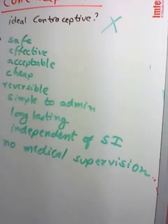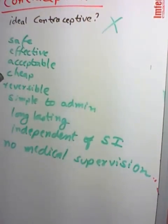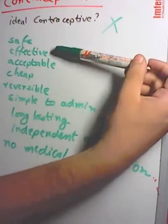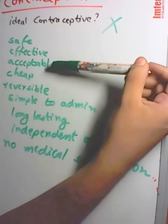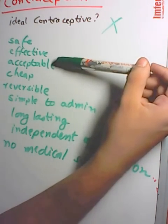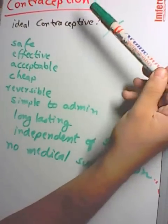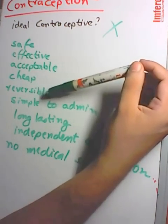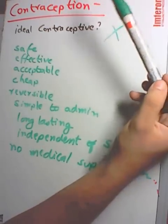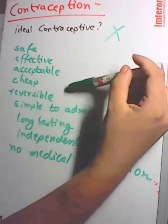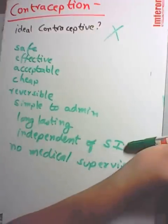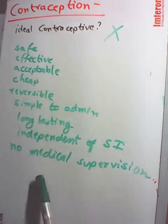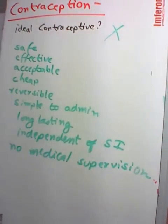These are the characteristics: safe — because if safety of the mother is compromised nobody will use it; effective — because if the failure rate is high it won't be popular; acceptable — if the method is embarrassing the patient won't use it; cheap; reversible — the patient should be able to reverse it when she wants to get pregnant again; simple to administer; long lasting; independent of sexual intercourse; and not requiring too much medical supervision.